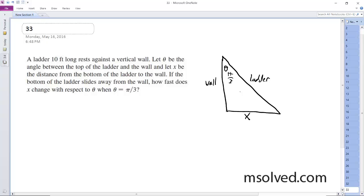So what we want to do is we want to find if the bottom of the ladder slides away from the wall, how fast does x change with respect to theta when theta is equal to pi over 3?